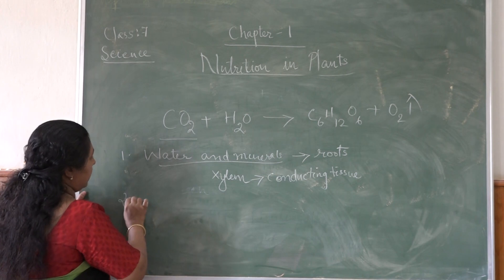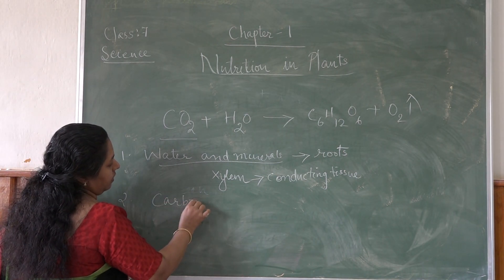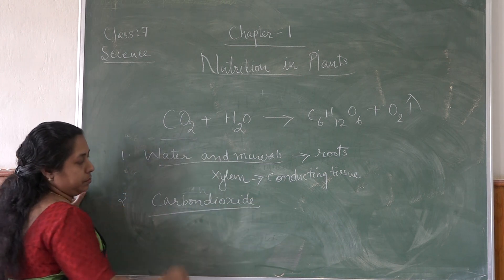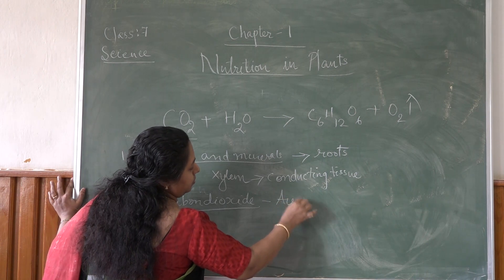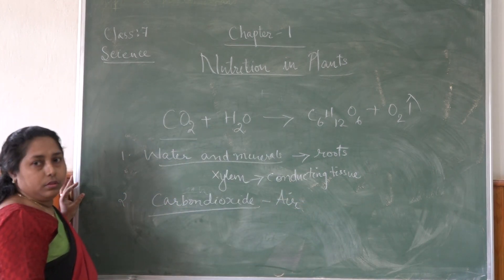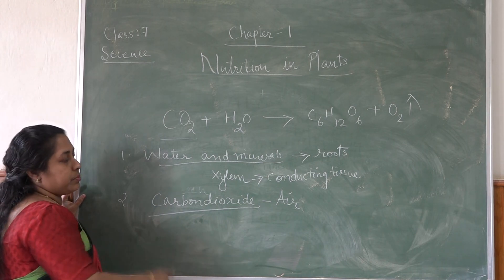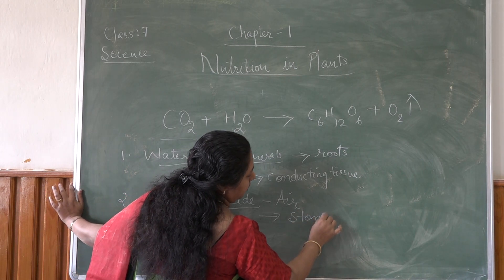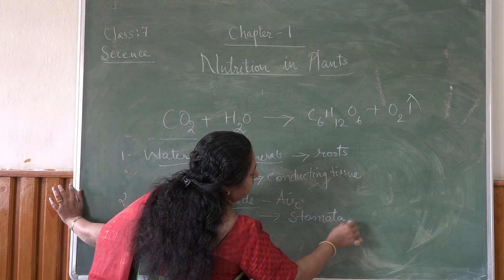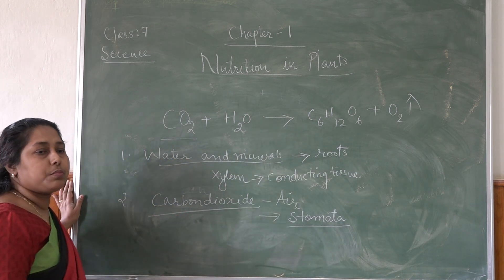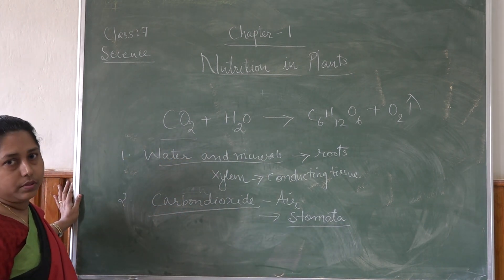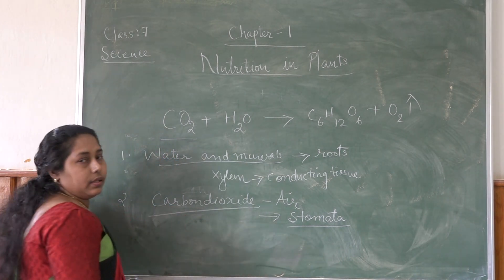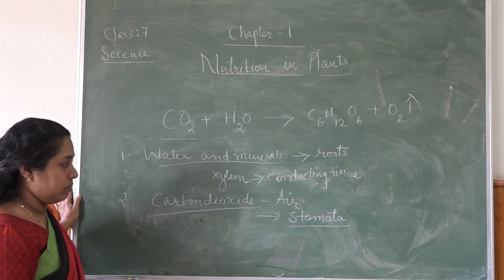Then second one is carbon dioxide. Carbon dioxide is present in the atmosphere or air. The plants absorb this carbon dioxide through an organ known as stomata. Stomata are the small fine openings which are present on the lower side of the leaves. Stomata are controlled by two guard cells, which help them to open and close.